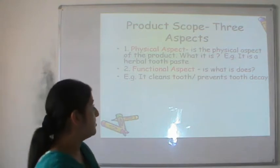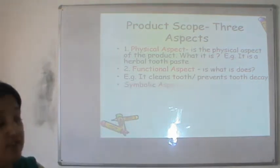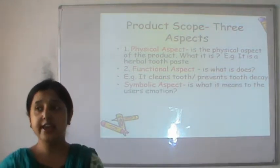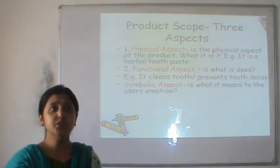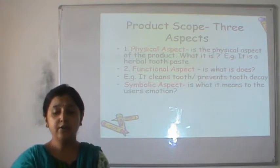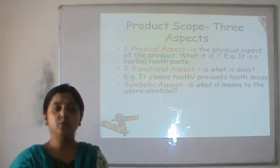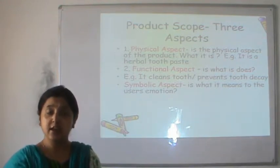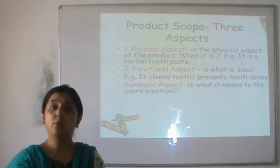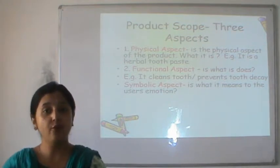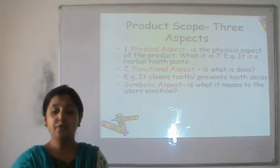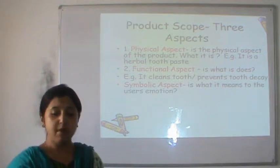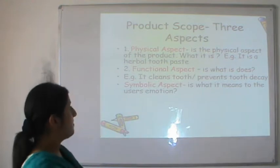There is a third level where consumers are indulging themselves these days — the symbolic aspect. It takes the decision of acquiring a product to a different level. People do not just go to buy a toothpaste; they go to buy a Colgate or a Pepsodent. They do not go to buy a phone; they want to buy an Apple iPhone. That is the sort of emotional connect they feel with different brands available in the market — this is where the emotions come in.